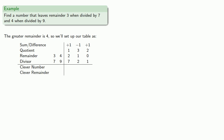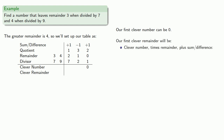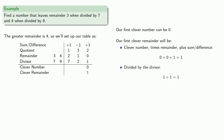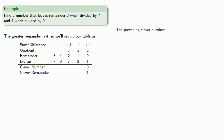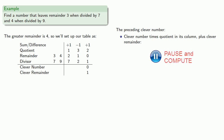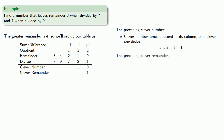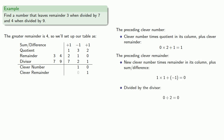Because our last divisor is going to be 1, any number will work as our clever number, so our first clever number can be 0. The first clever remainder will be our clever number times the remainder plus the sum or difference, then divided by the divisor.